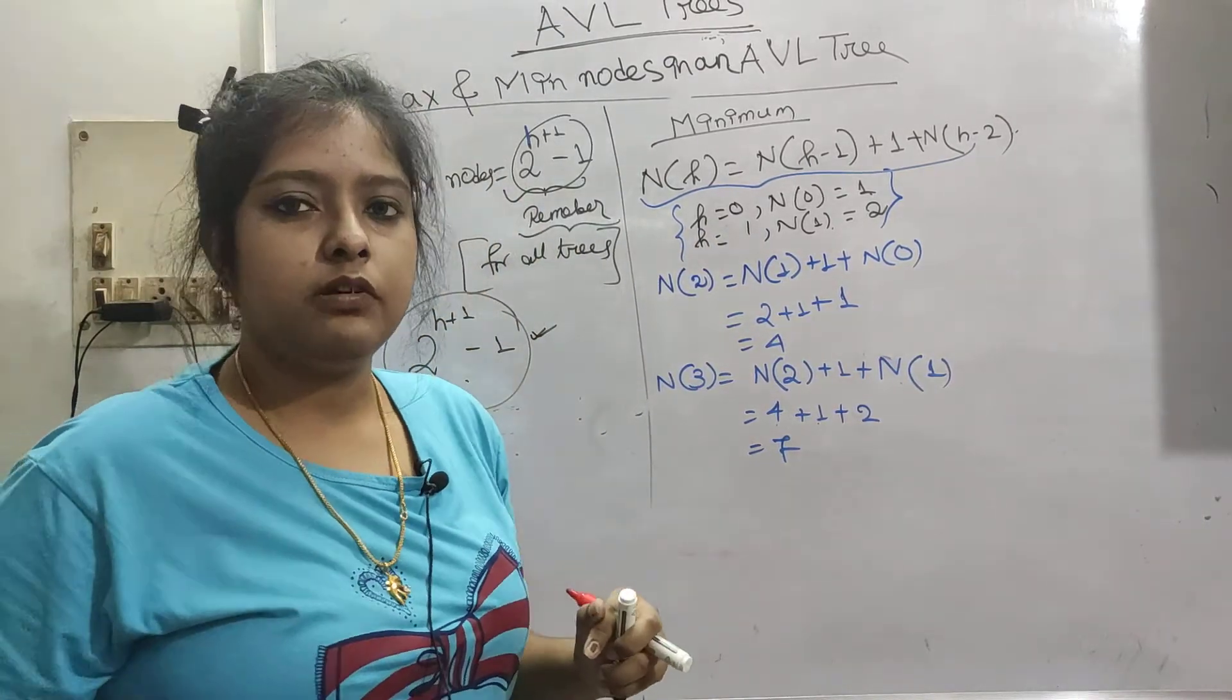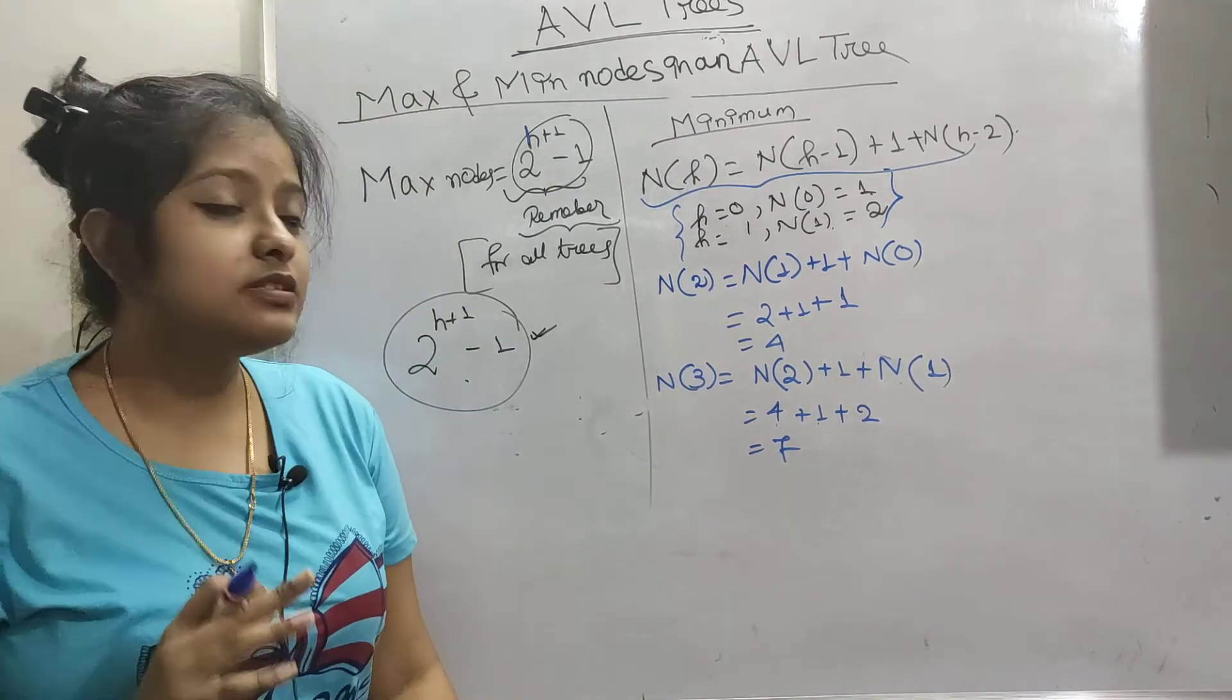This is all about maximum and minimum number of nodes in an AVL tree.